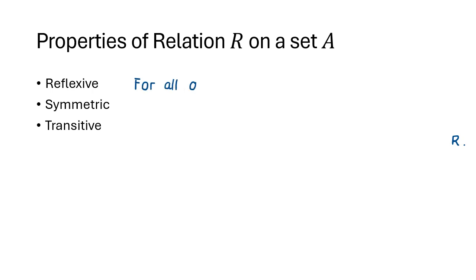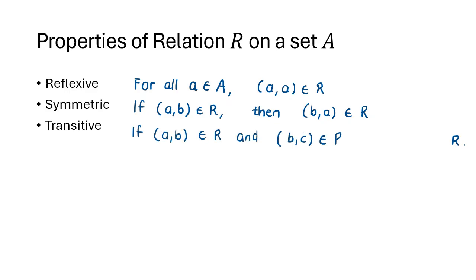For symmetry, if we have that two elements are related, for instance a and b, then we also have to have that b is related to a, meaning the order in which they are related is not important. If one of them is in the relation, the other one also has to be. For transitivity, if we have that a is related to b and that b is related to c, then a must be related to c as well.